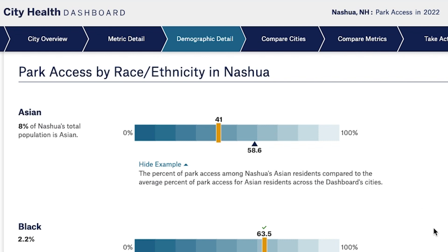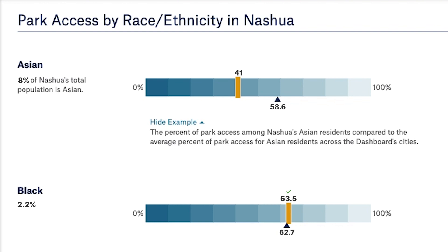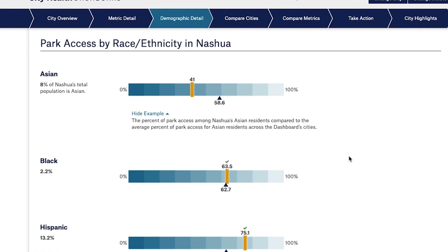This means that Nashua's Asian residents have less park access on average than Asians in other cities. And if you look at the bar below, you can see that Nashua's Black population is smaller than the Asian population, but those residents have higher park access than their Asian counterparts.